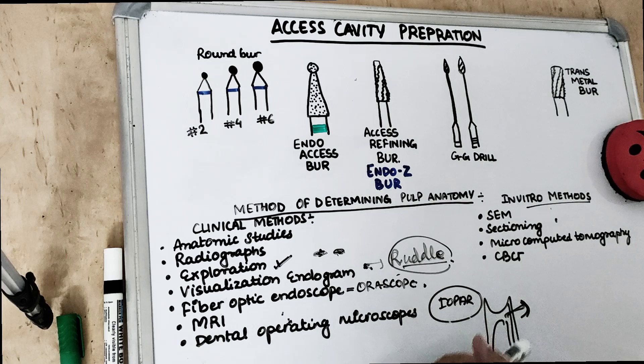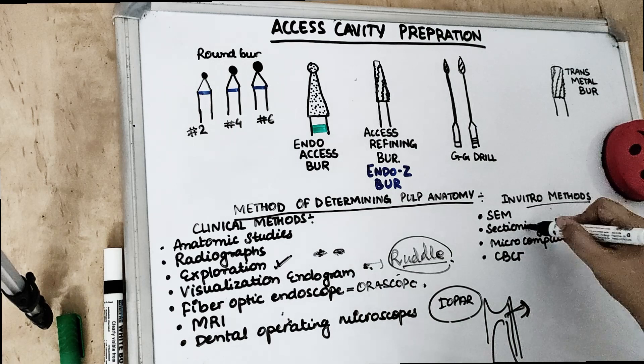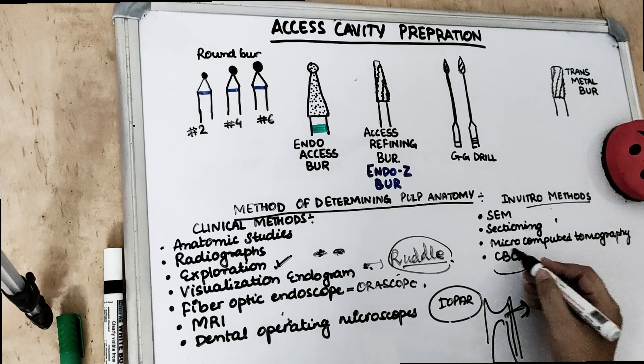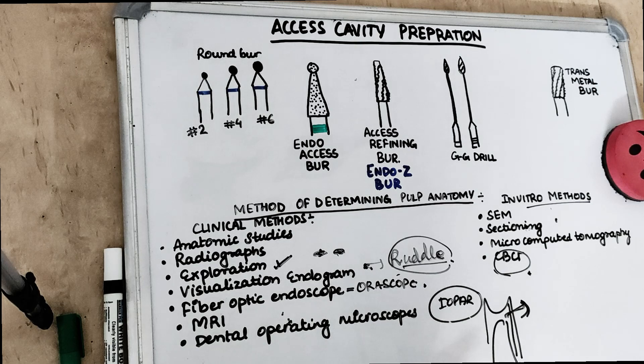For in vitro methods, sectioning involves longitudinally sectioning the tooth and visualizing it for the root canal system. We also use radio-contrasting media or SEM (scanning electron microscopic) analysis, which evaluates root canal anatomy. CBCT, cone beam computed tomography, also provides information about the morphology of the root and canal.